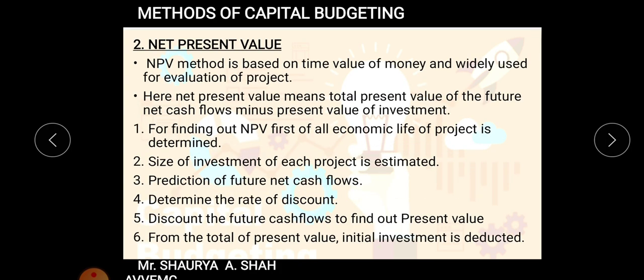Moving on to today's topic: the next method is known as Net Present Value method, commonly known as NPV. While ARR was basically dependent upon the original investments and the accounting rate of return, NPV method is basically based upon the time value of money, as the name itself says — Net Present Value.